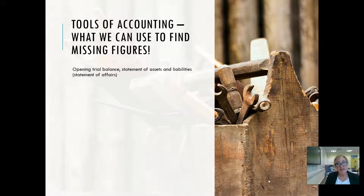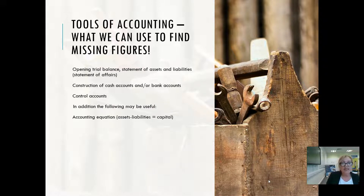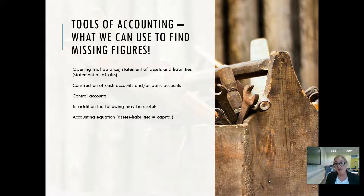We have a number of tricks in our toolbox to find those missing figures. If we're lucky, we may have an opening trial balance from last year's accounts. Or we may be able to draw up a statement of affairs — a list of the assets and liabilities — to find closing balances and so on. We can draw up control accounts: a sales ledger control account to find credit sales, and a purchase ledger control account to find credit purchases. The accounting equation — assets minus liabilities equals capital — is also useful. If we know two of the three figures, we can work out the third. Generally we'll know assets and liabilities, so we just take one away from the other to find the capital the owner has invested.